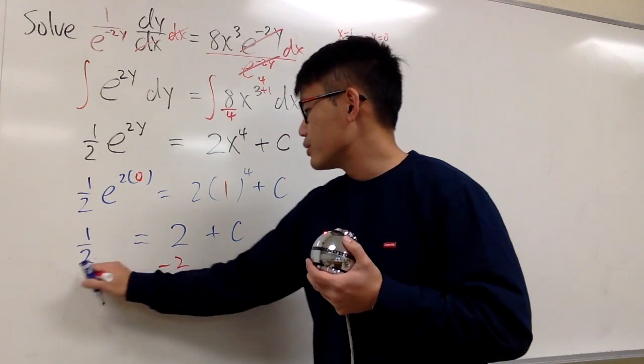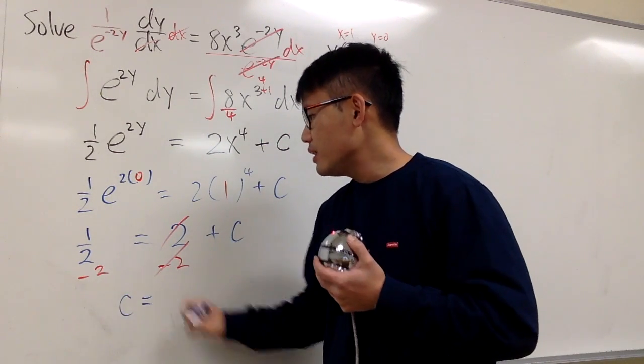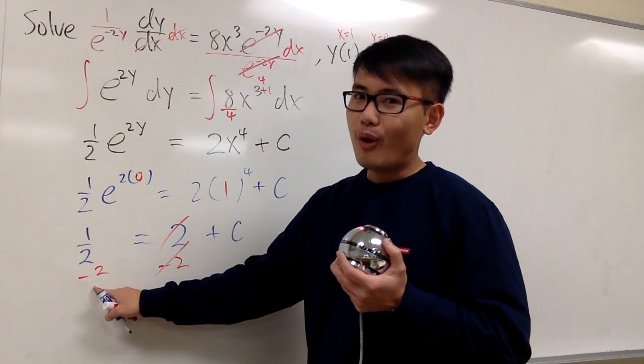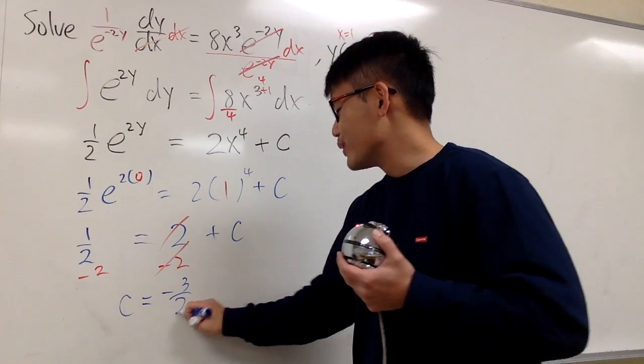And of course, we minus 2 on both sides. So c will be 1 half minus 4 over 2 is negative 3 over 2.